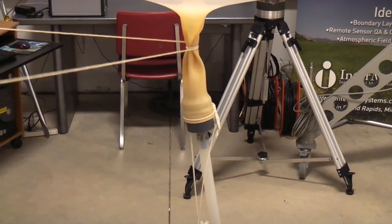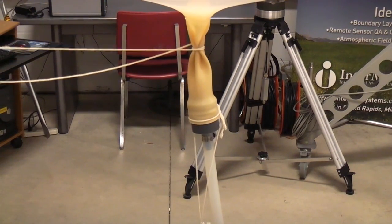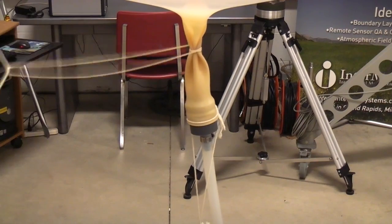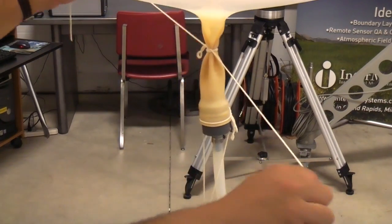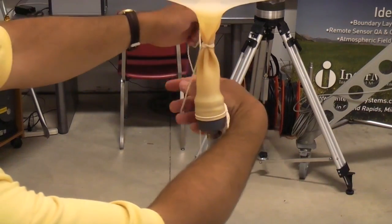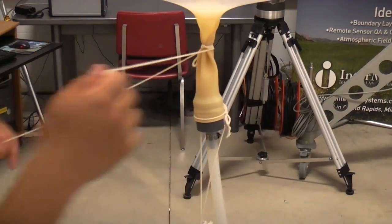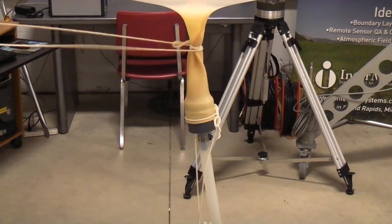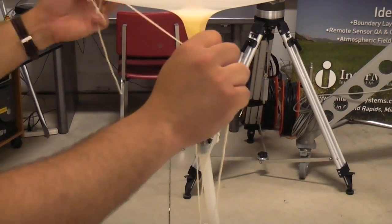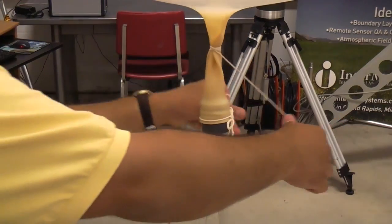We'll take the other ends of the string, wrap them around the balloon again, and create that same X, and pull it tight. And we'll keep repeating this over and over until we get about a quarter inch of the neck tied off.